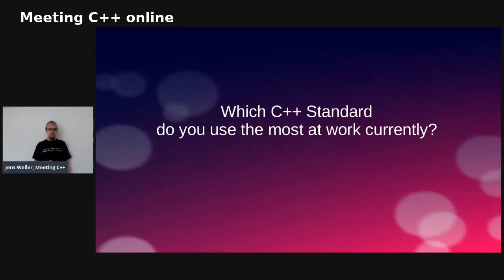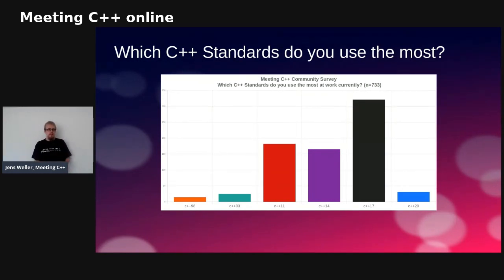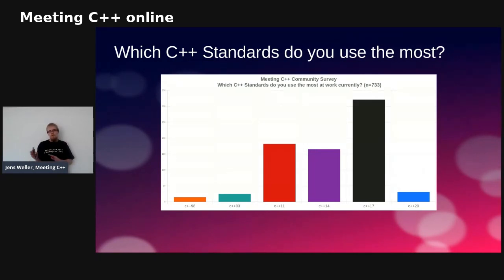I asked the standard question: which standards do you use the most? It's a single choice question, and you find that the standards of the last decade are the dominating standards right now. This graph might help you argue for moving to C++17, or if you're already on 17, maybe look at moving to C++20. If you're on C++98 or 03, this is a good basis to say whether your code base can make the effort to move. Some of those C++98 or 03 code bases can never really move towards newer standards and may eventually be rewritten.